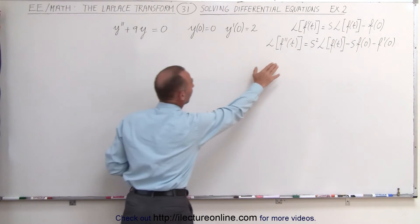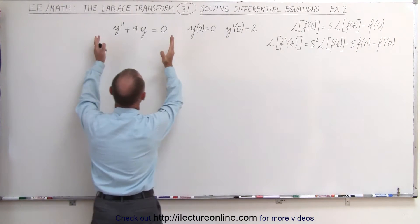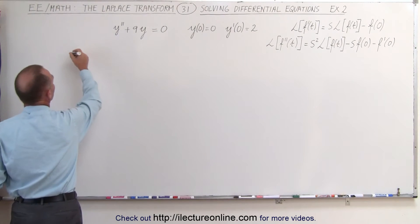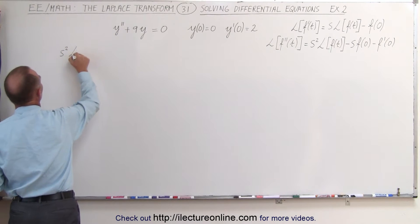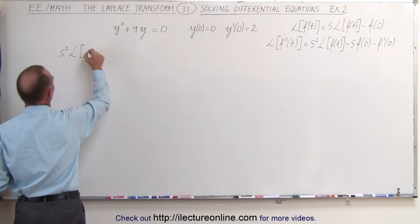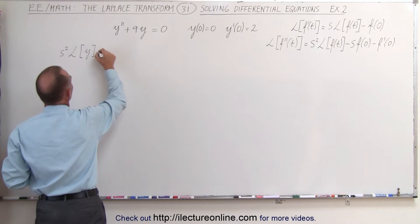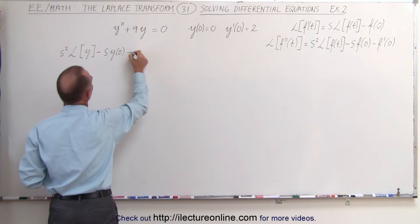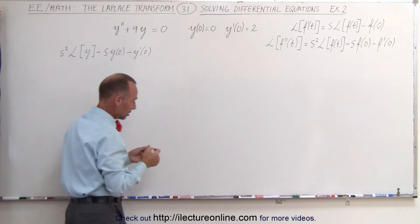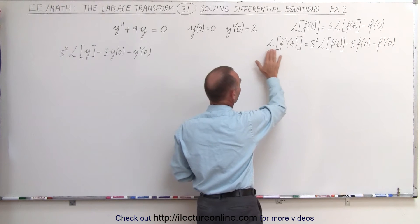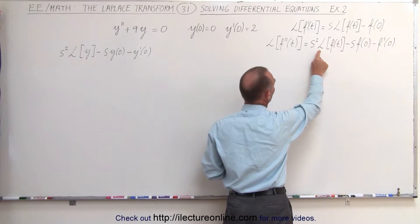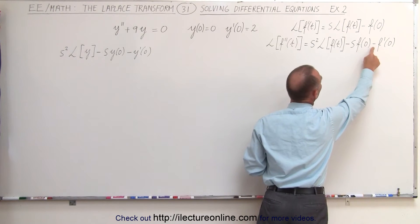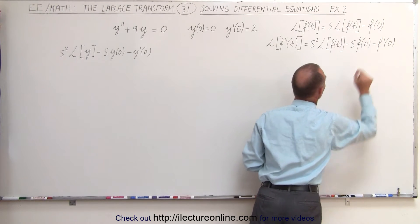y double prime can be found using this equation right here. So if we take the Laplace transform of both sides of the equation, the left side will look like this. We get s squared times the Laplace transform of the original function, minus s times y at 0, minus y prime at 0. So you can see that if we take the Laplace transform of the second derivative, we get s squared times the Laplace transform of the function, minus s times the function evaluated at 0, minus the derivative of the function evaluated at 0.